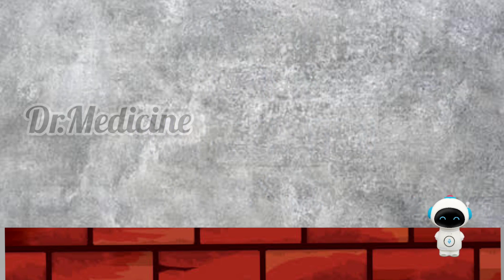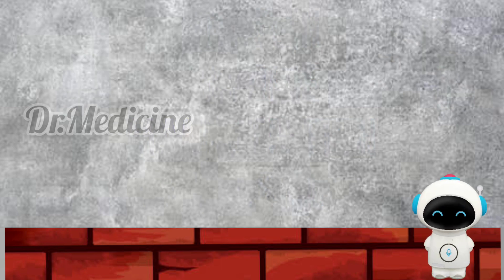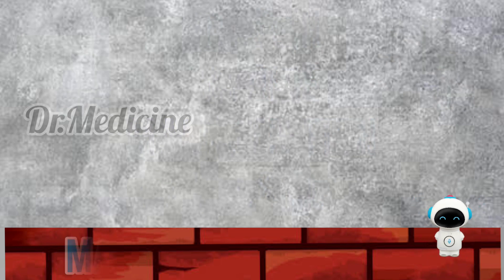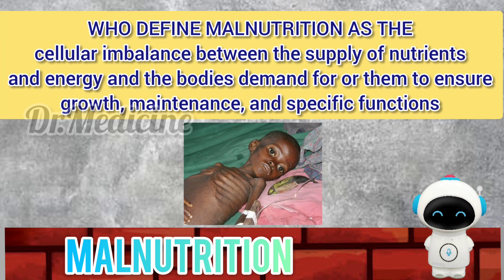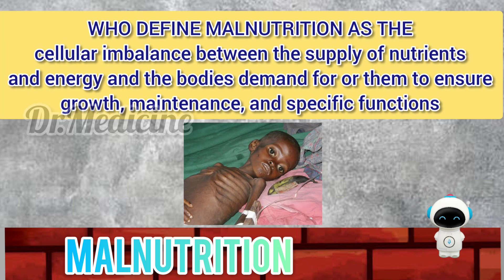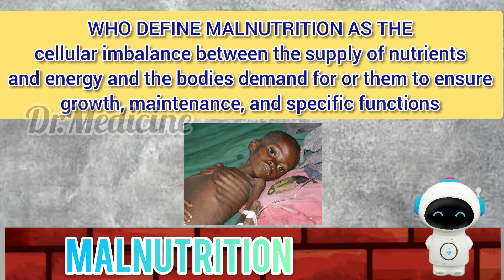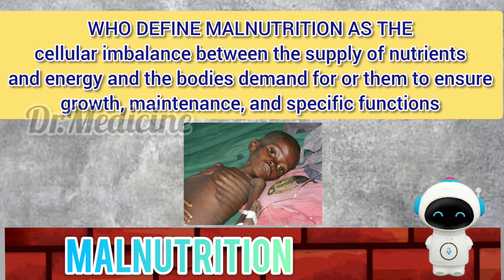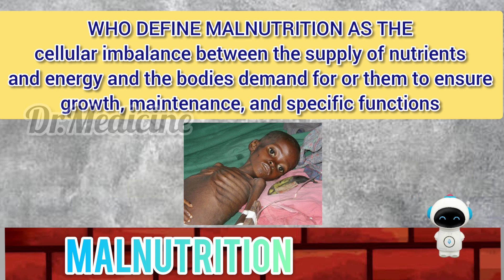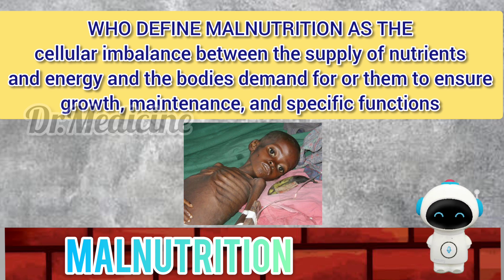Before entering into the topic, we should know what is malnutrition. According to the World Health Organization, malnutrition is defined as the cellular imbalance between the supply of nutrients and energy and the body's demand for them to ensure growth, maintenance and specific functions.